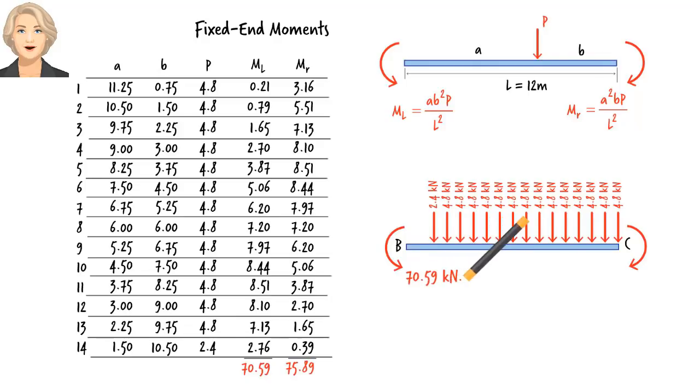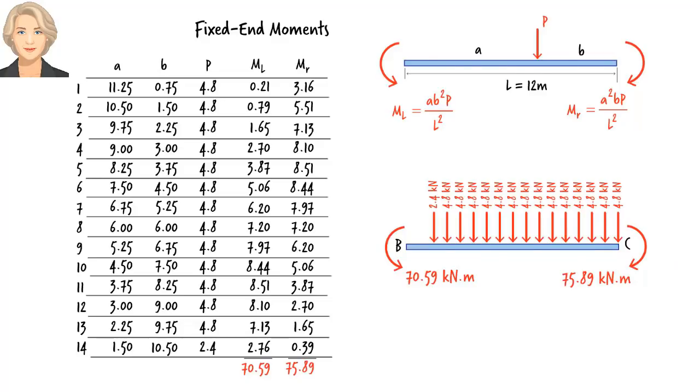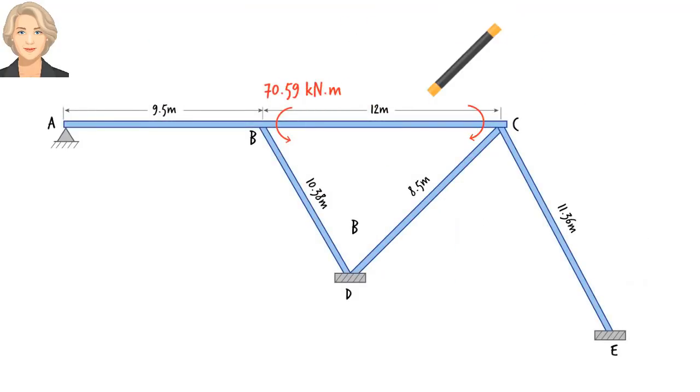We are now ready to use the slope deflection method. Note that the frame has three non-zero joint rotations at joints A, B, and C. Therefore, we need to write three joint equilibrium equations. Let's begin by writing the slope deflection equations for each member. Here are the generic equations.